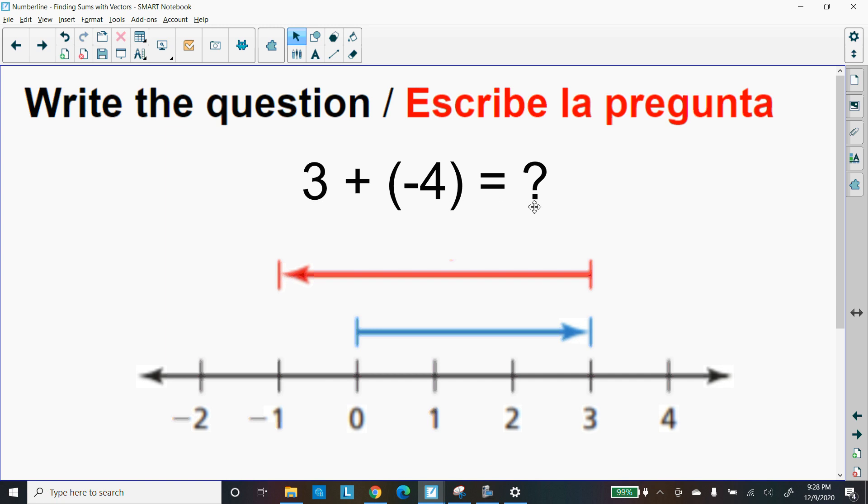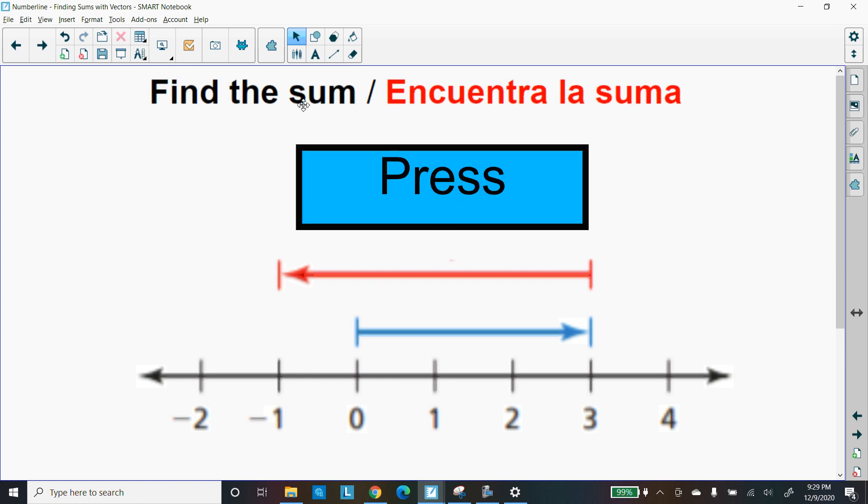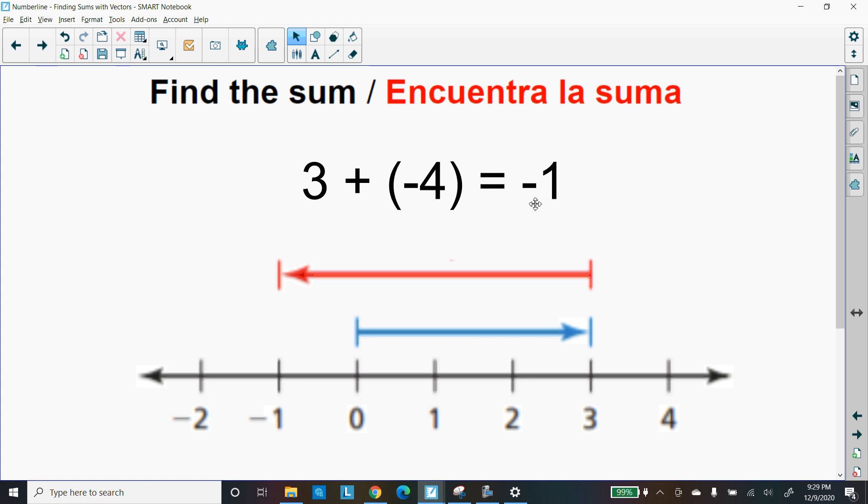Now I've got to figure out what that's equal to. So remember, all you have to do is go to the second vector and look at where it stops at. So it stops at negative 1. So that's going to be my answer. So when you find the sum, the answer is going to be right there at the second vector.